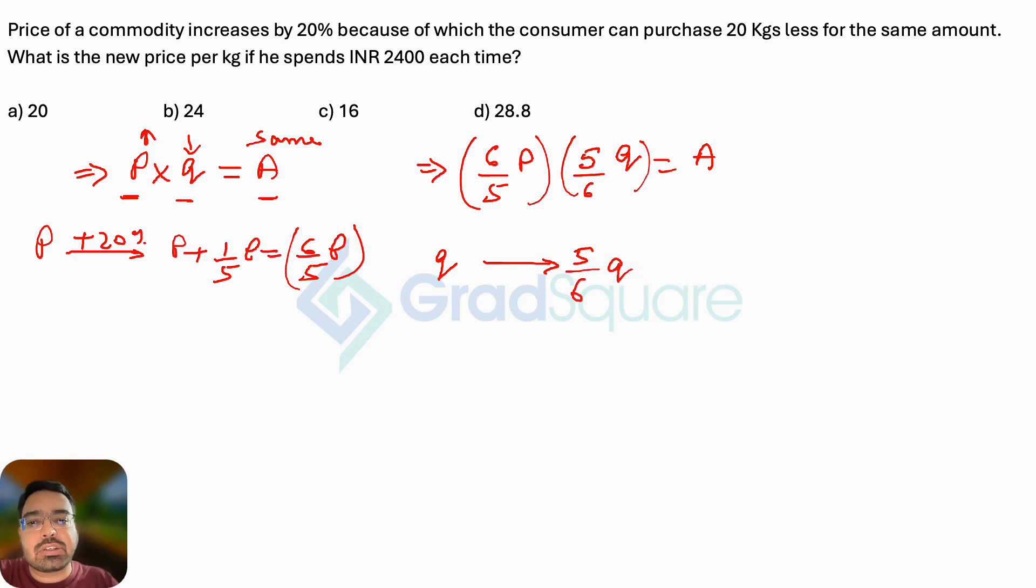That means there is a reduction. You can observe this Q as 6/6Q and the final quantity is turning out to be 5/6Q. That means there is a reduction of 1/6Q. You can get this 1/6Q by simply doing Q minus 5/6Q as well. So the reduction is 1/6Q.